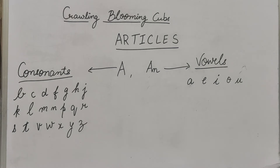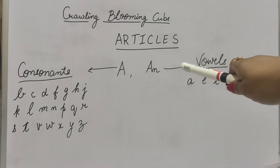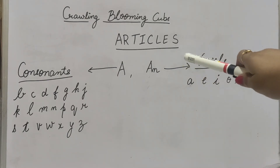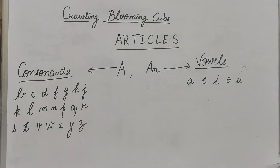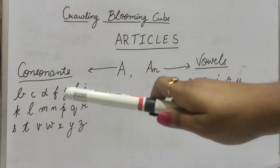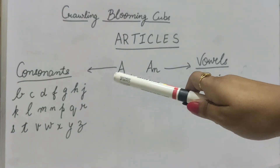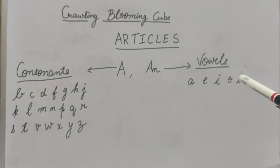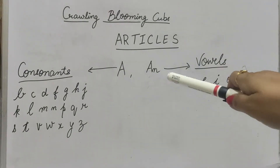To hum jab bhi koi word likhenge jinka first letter A, E, I, O, U hai, to hum AN lagayenge. Aur agar koi bhi word consonant se start ho raha hai, to hum A lagayenge. Vowel hoga to AN lagayenge, consonant hoga to A lagayenge.